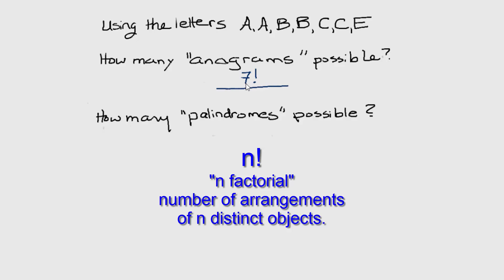But there's a very easy way to fix that. Count the number of A's, which is two, and you divide seven factorial by the number of arrangements of those two letters, two factorial, or two.